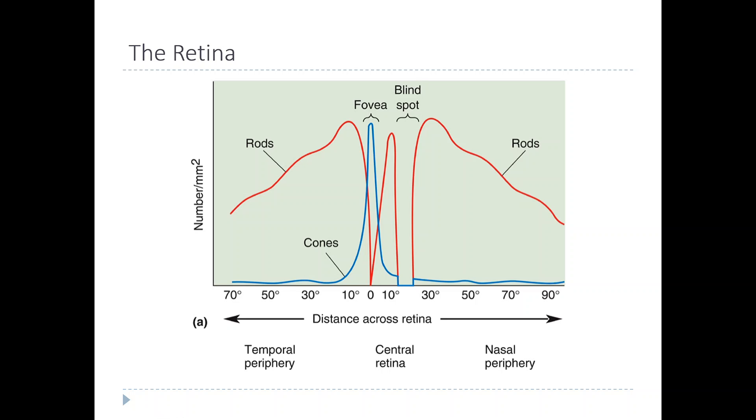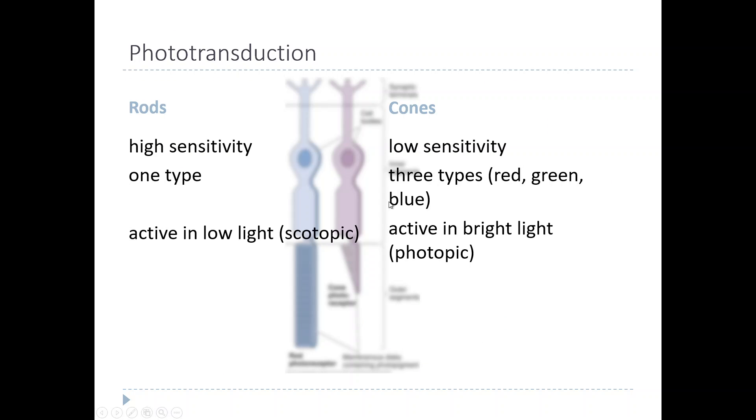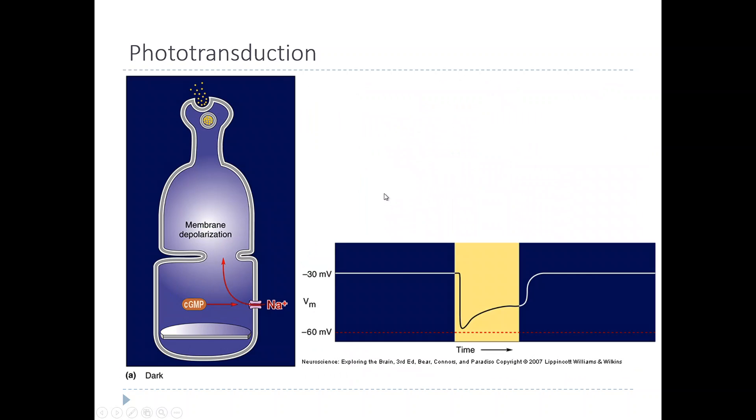One other important difference about the central retina versus the peripheral retina is that cones, it turns out, are more sensitive to light than rods. They have a higher sensitivity.